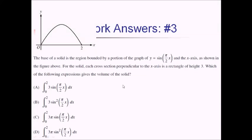For this calculator-allowed problem — although I'd call this one calculator neutral — we have the base of a solid bounded by a portion of y equals sine of pi over 2 times x and the x-axis. They gave us a nice picture. Cross-sections perpendicular to the x-axis are rectangles with a height of 3, and we want to know which expression gives the volume. It's a calculator question, but you really don't need a calculator — it's all about the setup.